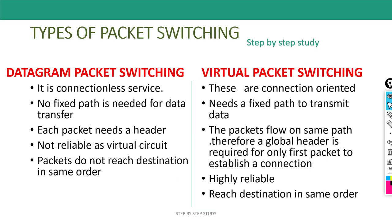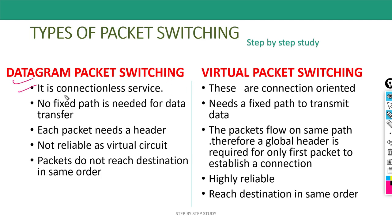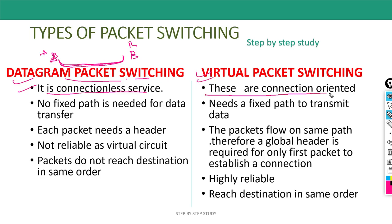Let's see how the types of packet switching are different. First, datagram packet switching is a connectionless service. For example, if you have computer A sending data to computer B, you can communicate without establishing any prior connection. But virtual packet switching is connection-oriented — before sending information or data, you need to establish a dedicated path and connection, then transfer the packets.